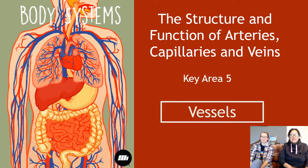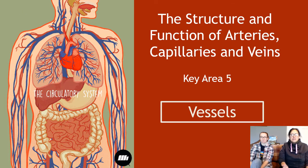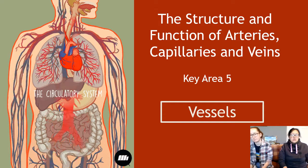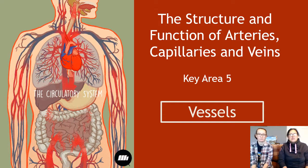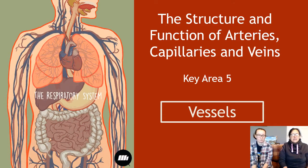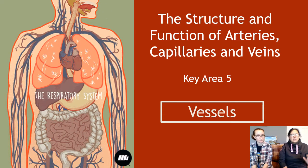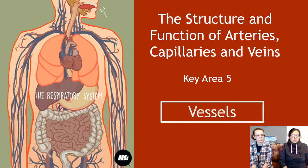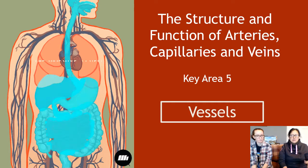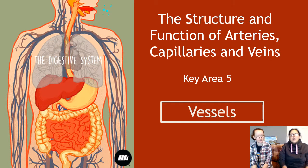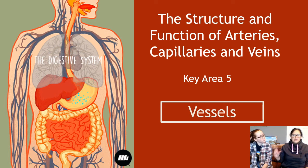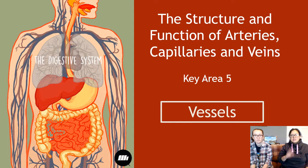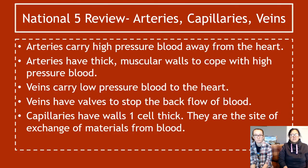We are on to key area 5 of unit 2, and key area 5 is the structure and function of arteries, capillaries and veins. This video is going to look at the structure of arteries, capillaries and veins, and then the second video focuses on what happens at capillaries with tissue fluid, lymph and that kind of thing. This first video is super easy and super quick.